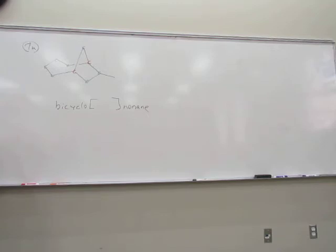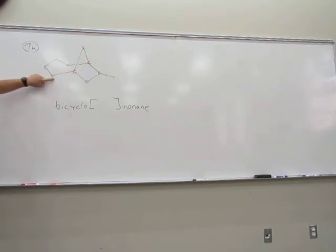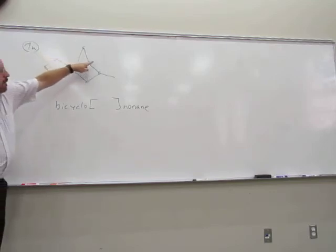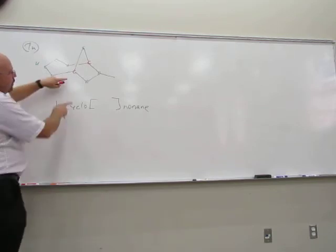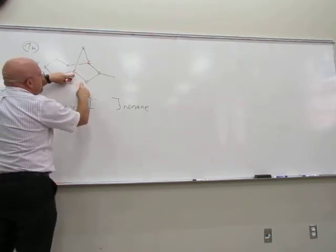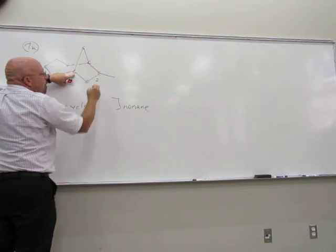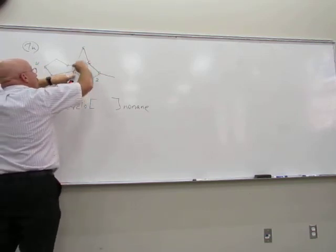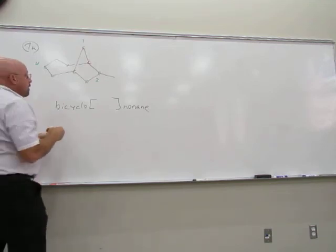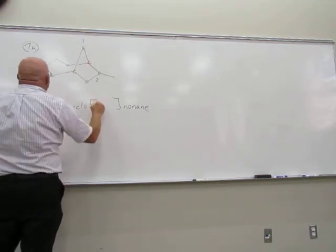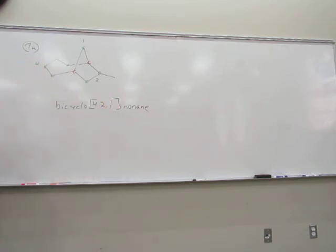The numbers in the brackets are the number of carbons in each bridge, listed in decreasing order. Going from bridgehead to bridgehead around to the left: one, two, three, four — that's four carbons in that bridge. Going around to the right: one, two — that's two carbons. Going over the top: one carbon in that bridge. So that's the numbers in the brackets: 4, 2, 1. This is a bicyclo[4.2.1]nonane.